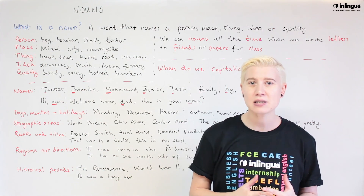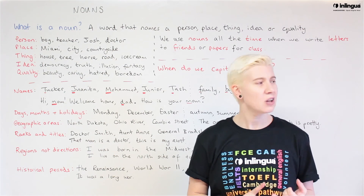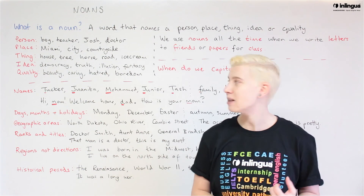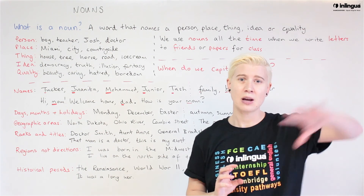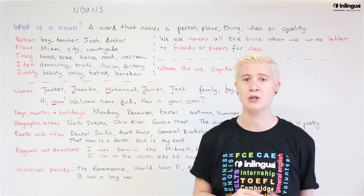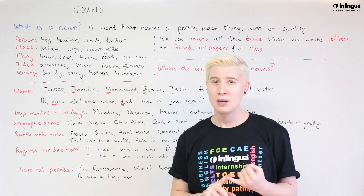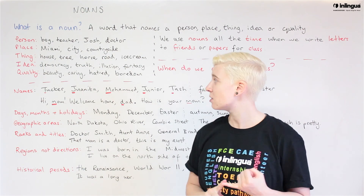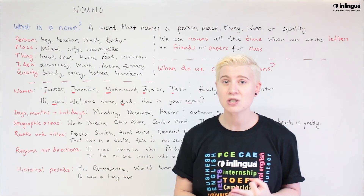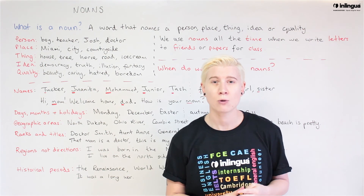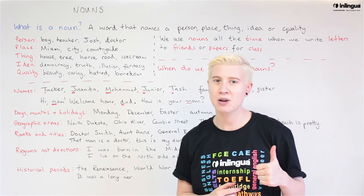For a place, for example, Miami or the city, the countryside, outside of the city. And for a thing: house, tree, horse, road, ice cream — my favourite.